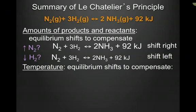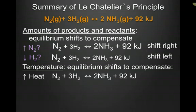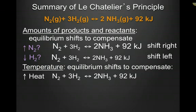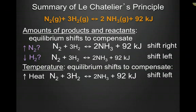What about if I change the temperature? Again, the equilibrium has to shift to compensate. If I increase the heat of a reaction, we have to first determine in which direction it is endo- or exothermic. In this example, the forward direction is exothermic and the reverse direction is endothermic. An increase in heat favors the endothermic reaction. If I increase the temperature, the equilibrium is going to shift to the left, increasing the concentration of reactants.